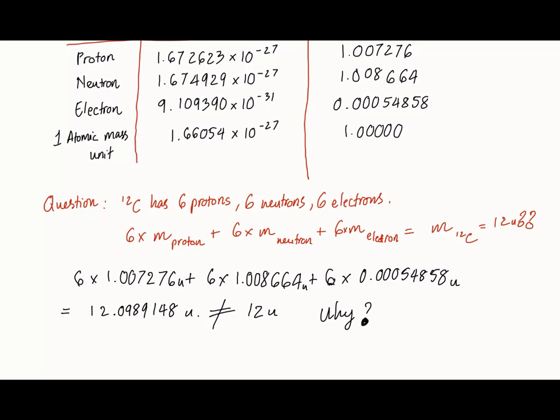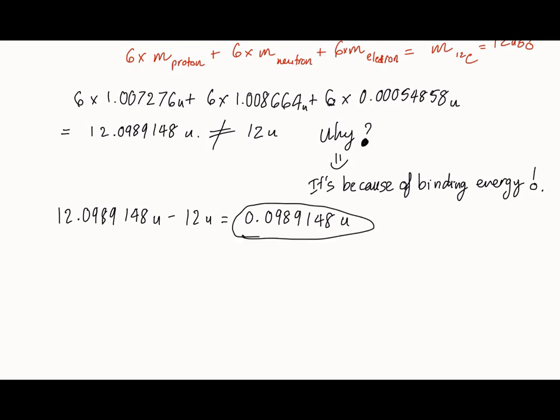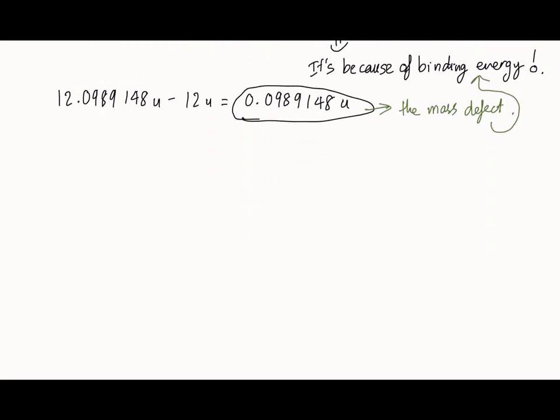Why is the mass calculated by the addition of individual neutrons and protons and electrons to make up a carbon-12 bigger than the mass of carbon-12 itself? Now that difference in mass is actually called the mass defect. And it's due to the binding energy of the nucleus.